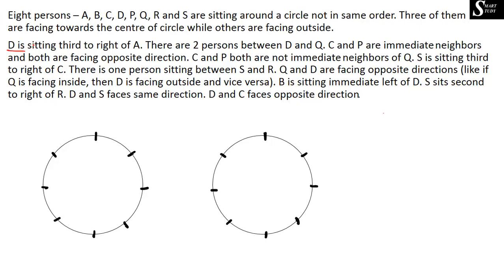The first information is: D is sitting third to the right of A. So A's third right must be D. But we are not sure in which direction A is facing, so we can go along with two possibilities. Let's assume A is facing center in one case, and in the other case A is facing outward. If A is facing center, A's third right would be one, two, three — so D has to be substituted there. If A is facing outward, A's third right would also be one, two, three in the opposite direction — so D has to be substituted there.